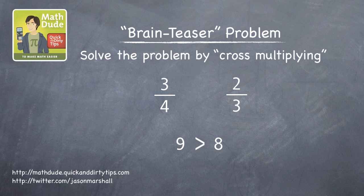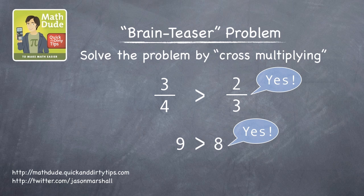Now compare those two numbers. Is three quarters, the first one, greater than the second? It is. So what does that mean? It means the first fraction, three quarters, is also greater than the second, two thirds. That's all there is to it.